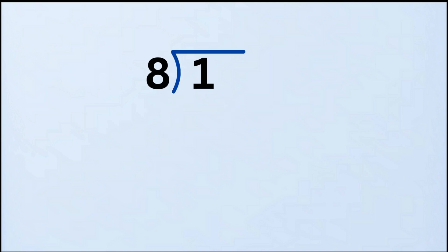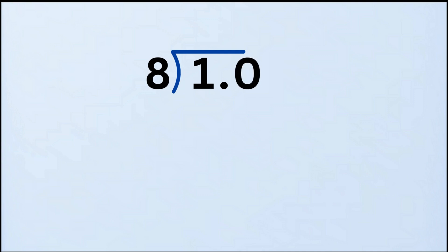How many times does 8 go into 1? Well, 8 doesn't go into 1, because 8 is bigger than 1. So we bring in our secret weapon — the decimal point. We place a decimal point right after the 1 inside the division bar, making it 1-point, then add a zero right after the decimal point — and now it looks like 10. Also, place a decimal point in the quotient, the answer area, right above the decimal point in the dividend, just to make sure you don't forget at the end.